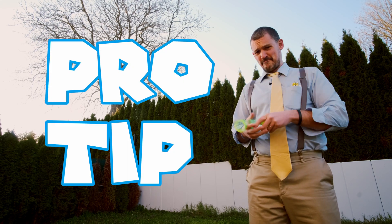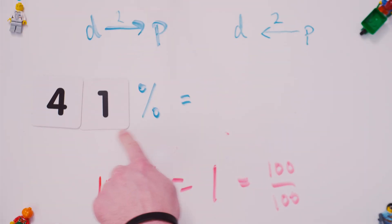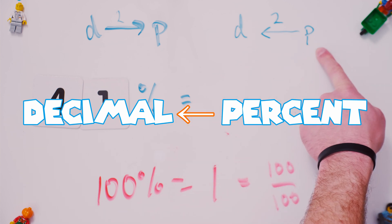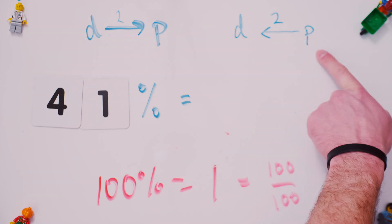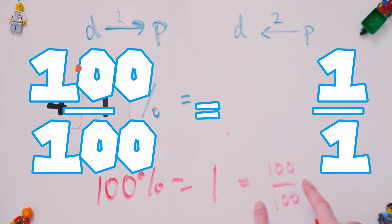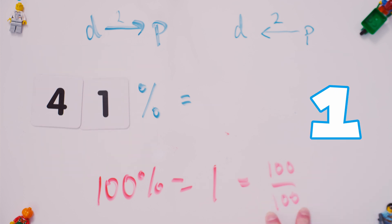It's pro tip time. Let's convert 41% into a decimal. So we're going from the P, we're going to go backwards to D. So follow the arrow, I'm going to go two spaces. That's a consequence of one being equal to 100, one hundredths.